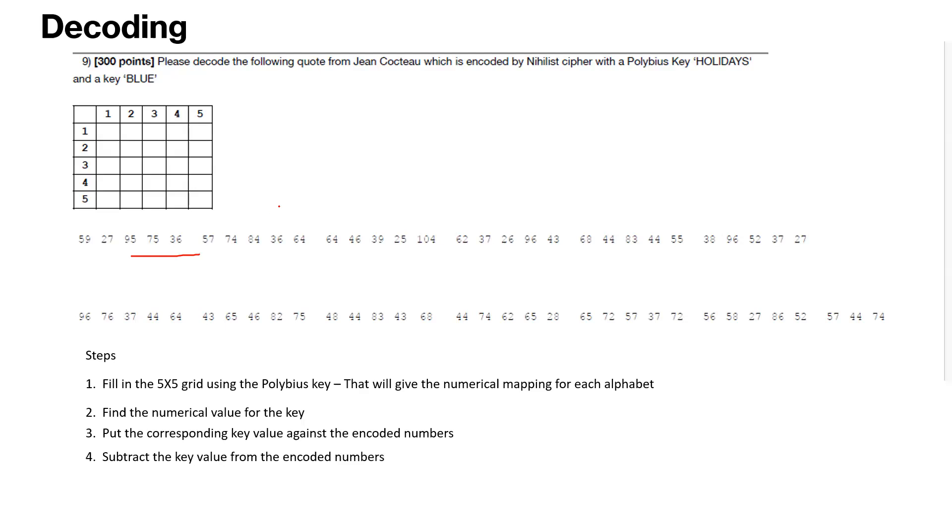And then we will subtract the key value from the encoded numbers. So that would be the fourth step. And finally, once we have the subtracted values, we will use the grid to translate the numbers back to the plain text.